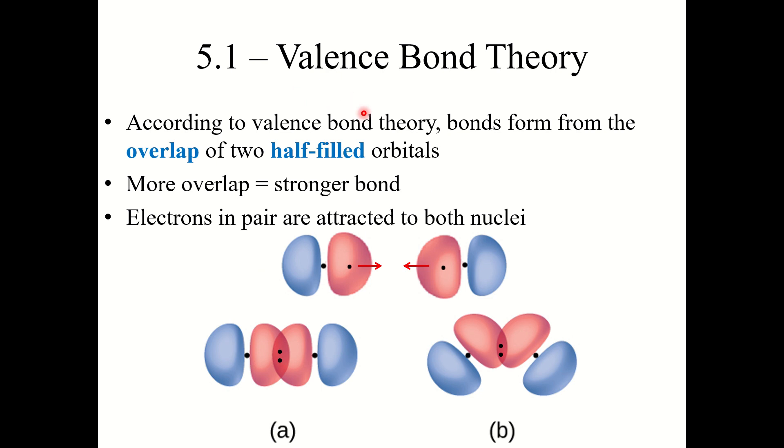Here we are getting into the details of how bonding actually works. There are two major theories we're going to look at in this chapter. First is valence bond theory. Valence bond theory says that bonds form from the overlap of two half-filled orbitals. So each atom has a half-filled atomic orbital, and these atomic orbitals overlap with one another to form a bond.